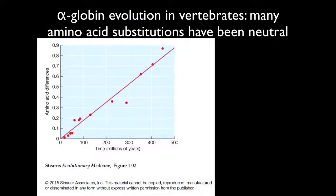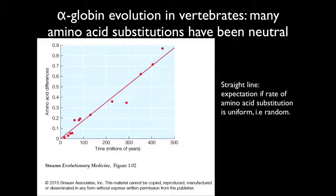Here is an example of what happens when a variant is neutral. Alpha globin evolution in vertebrates has had many amino acid substitutions. On the x-axis is time in millions of years; on the y-axis is the number of amino acid substitutions. Each point is a comparison between animals that have been evolving over the last 500 million years. The line is very close to straight, which is what we'd expect if the rate of amino acid substitution is uniform — meaning it's occurring at random — because there are parts of the molecule where a substitution makes essentially no difference to function.